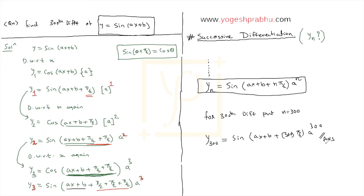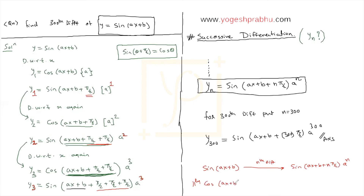This can also be remembered as a standard formula. If y equals sine(ax + b), the nth differentiation is a^n · sine(ax + b + nπ/2). Similarly, for cosine: if y equals cos(ax + b), the nth differentiation is a^n · cos(ax + b + nπ/2). The procedure for proving the cosine formula is almost the same, so I leave that for you to solve on your own.